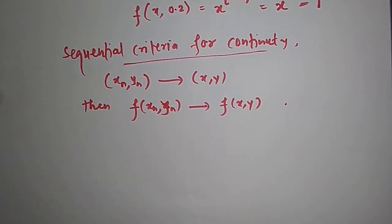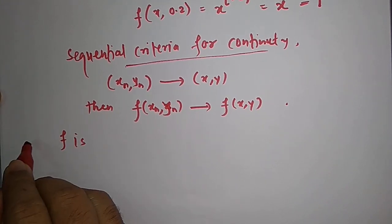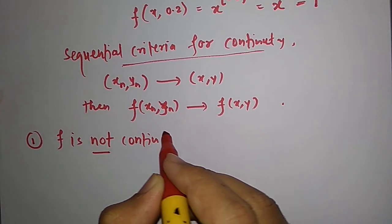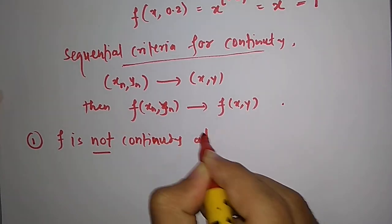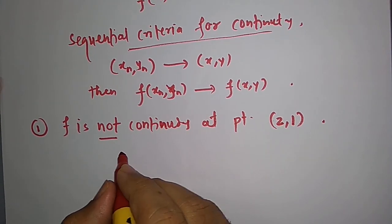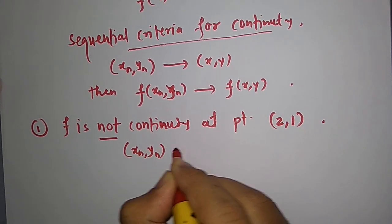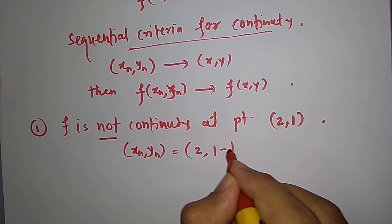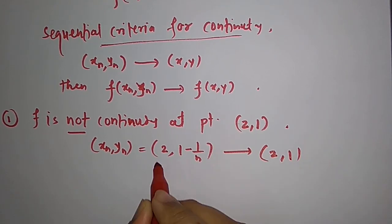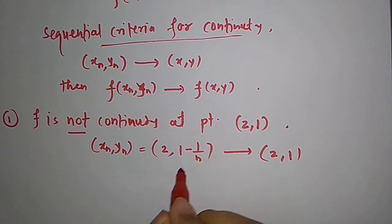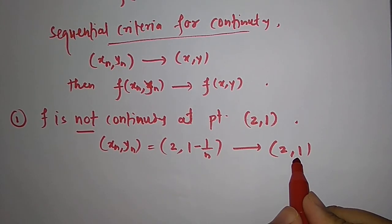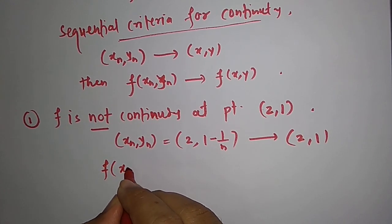Now we will show that f is not continuous, addressing the first option. We will show that f is not continuous at the point (2, 1). So let us take the sequence (xₙ, yₙ) to be (2, 1 − 1/n). This converges to (2, 1) because xₙ is the constant sequence 2, which converges to 2, and 1 − 1/n converges to 1. So (xₙ, yₙ) converges to (2, 1). Now let us see what f(xₙ, yₙ) is.